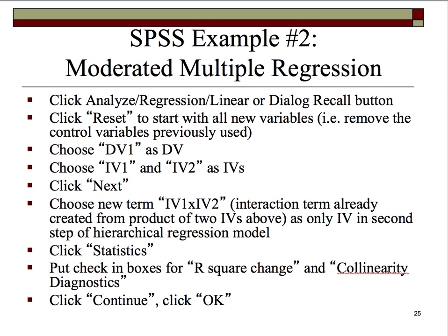We'll choose DV1 as our DV — the same DV used in the previous example — and use IV1 and IV2 as IVs entered into block one. Clicking the Next button would then insert the new interaction term that we previously computed by mathematically multiplying IV1 by IV2. This new term, IV1 times IV2, would be the only independent variable included in the second step of the hierarchical regression model.